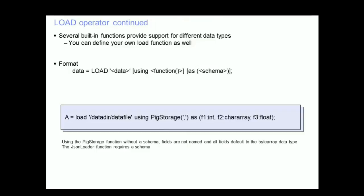Continuing with a similar example: A equals load '/data_dir/data_file' using PigStorage(',') AS (f1:int, f2:chararray, f3:float). This would read a comma-delimited file and interpret the first field as an integer associated with the name f1, the second field as a char array named f2, and the third as a float named f3.